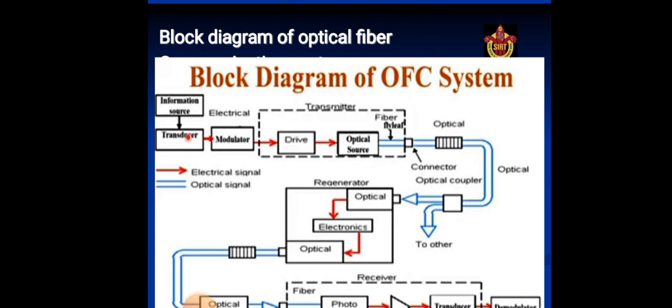For data transfer between computers, the message is already in electrical form. Second block is modulator. The modulator has two main functions. First, it converts the electrical message into proper format. Second, it impresses this signal onto the wave generated by the carrier source.